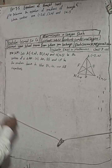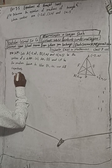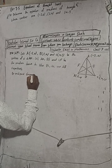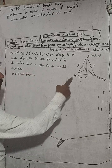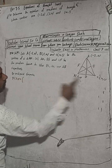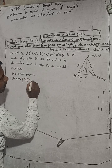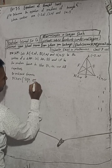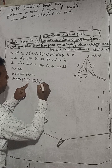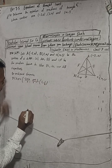Now, by the midpoint formula, midpoint D will be: x-coordinate = (-2 + 4) / 2, y-coordinate = (0 + 1) / 2. This gives us (-2 + 4) / 2 = 2/2 = 1, and 0 + 1 = 1, so 1/2.